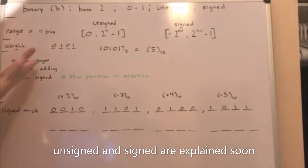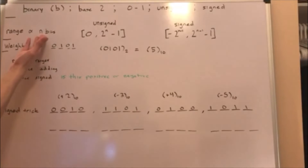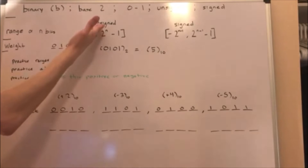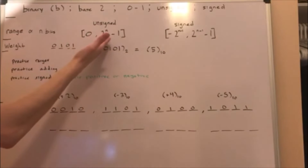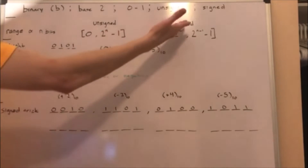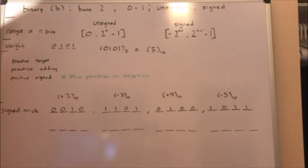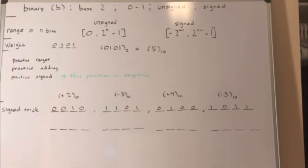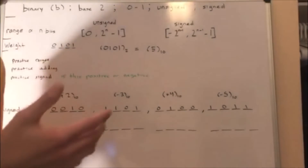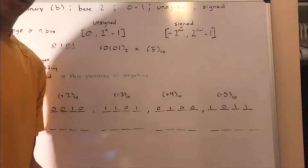It's a good idea to practice ranges. Decide on the number of n bits and then determine the range for both the unsigned n-bit binary number and the signed n-bit binary number. You should understand the range more as you get to the end of the video.